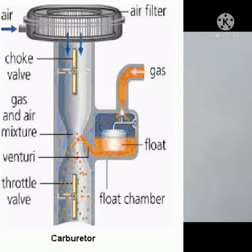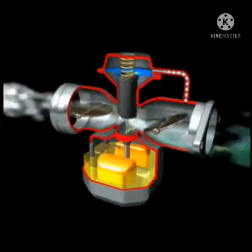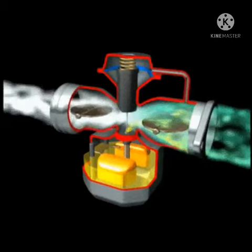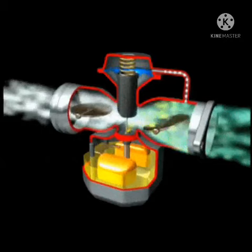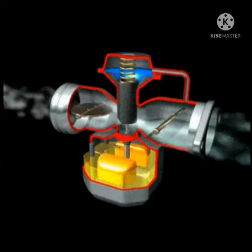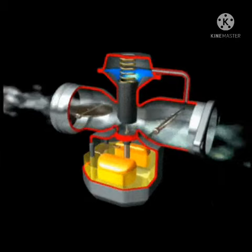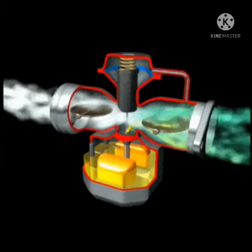I have showed you the carburetor in the engine and I have also showed you the figure of the same one. After that, I showed you how the carburetor works — it is also having a jet system, and one side is the air intake. When I open the isolator, the diaphragm will open.